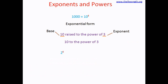Let's take one more example. Consider 2 to the power of 6. This is the exponential form. What does 2 to the power of 6 mean? That means we are going to multiply 2 with itself 6 times — 2 is the base and 6 is the exponent, so the number 2 appears 6 times in the product. Let's calculate: 2×2=4, 4×2=8, 8×2=16, 16×2=32, 32×2=64. So its value is 64.